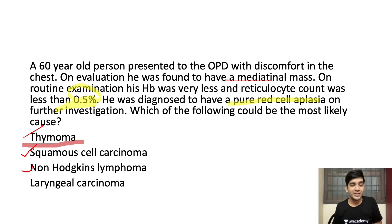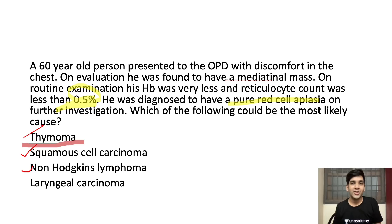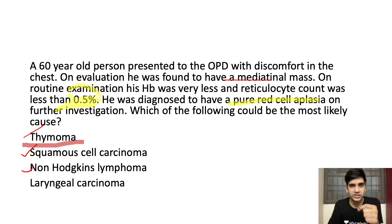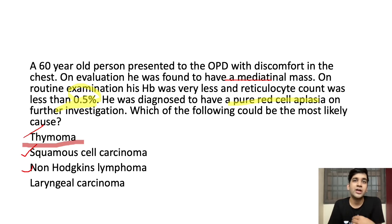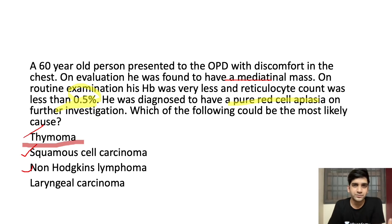Thymoma has an entire list of about 20 to 30 paraneoplastic syndromes. Among them, two keep repeating in the NEET-PG exam. One is pure red cell aplasia, as in this question. The other is myasthenia gravis. You must know at least these two — PRCA and myasthenia gravis — though Lambert-Eaton syndrome and many others are also on the list.